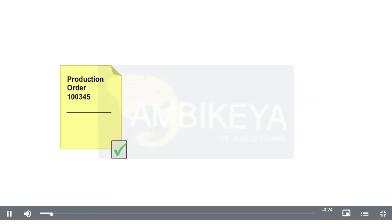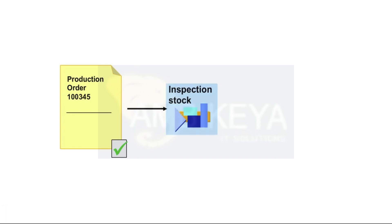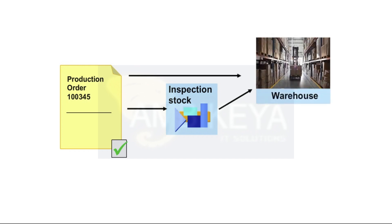When an order is completed, corresponding goods movements are triggered. You can inspect the following movements: Goods Receipt from Production into the Warehouse. When the goods are received at the warehouse, they become relevant as stock and are posted to inspection stock. Once the quality inspection has been completed and the goods have been accepted with the usage decision, they can be posted to unrestricted used stock.